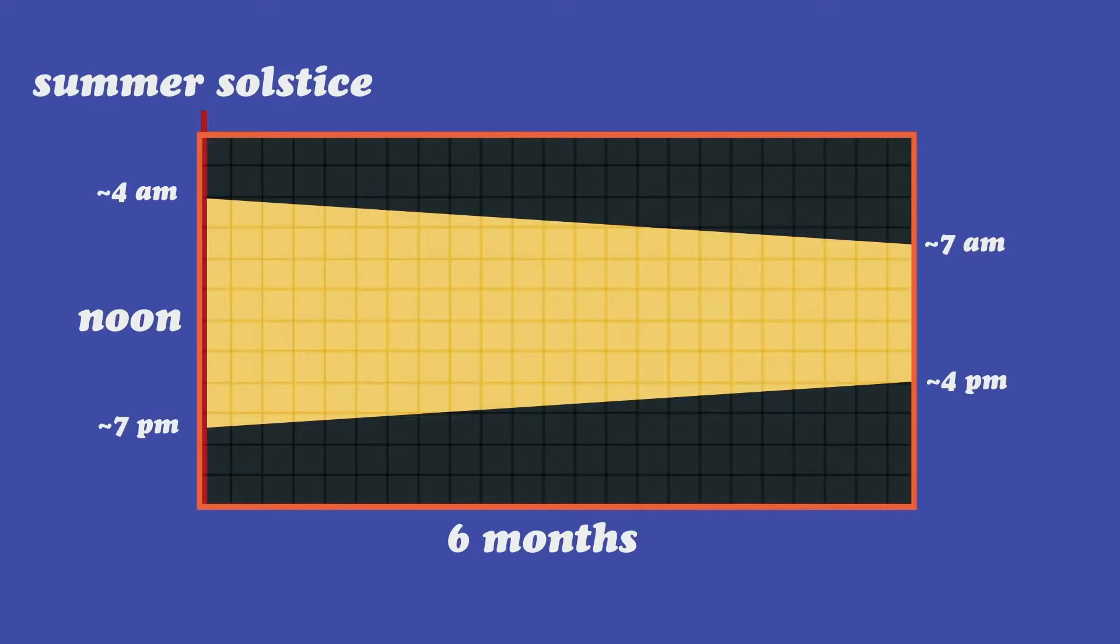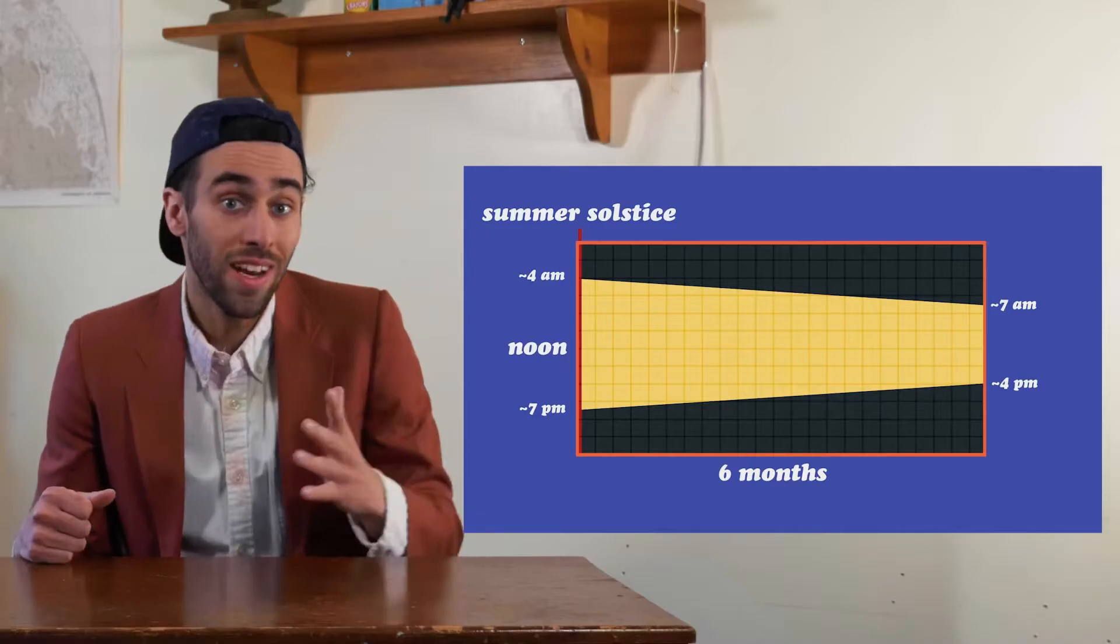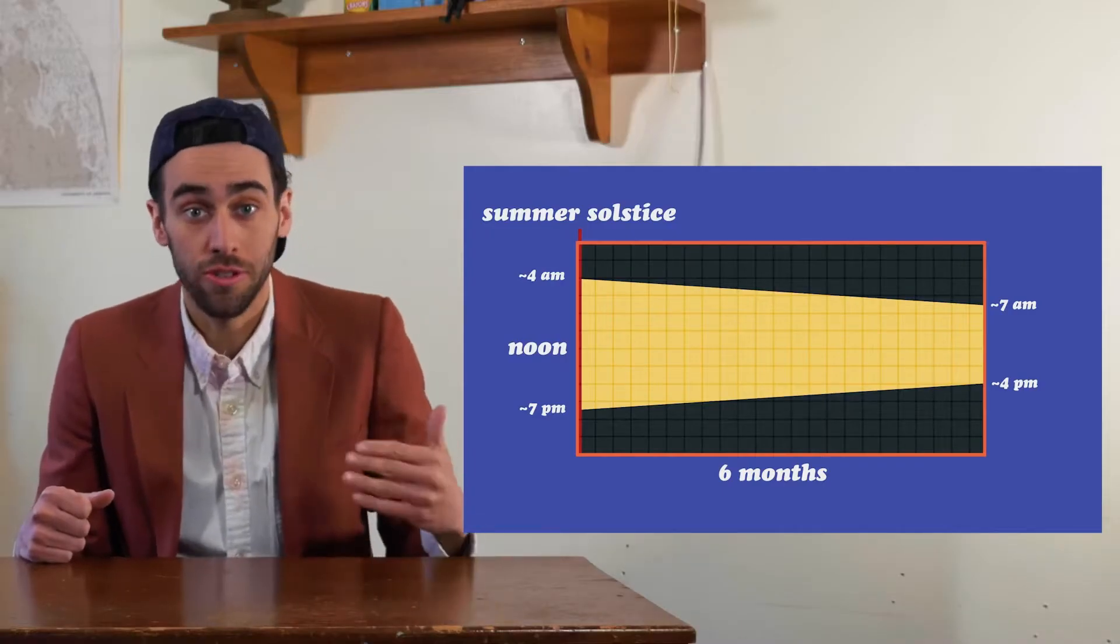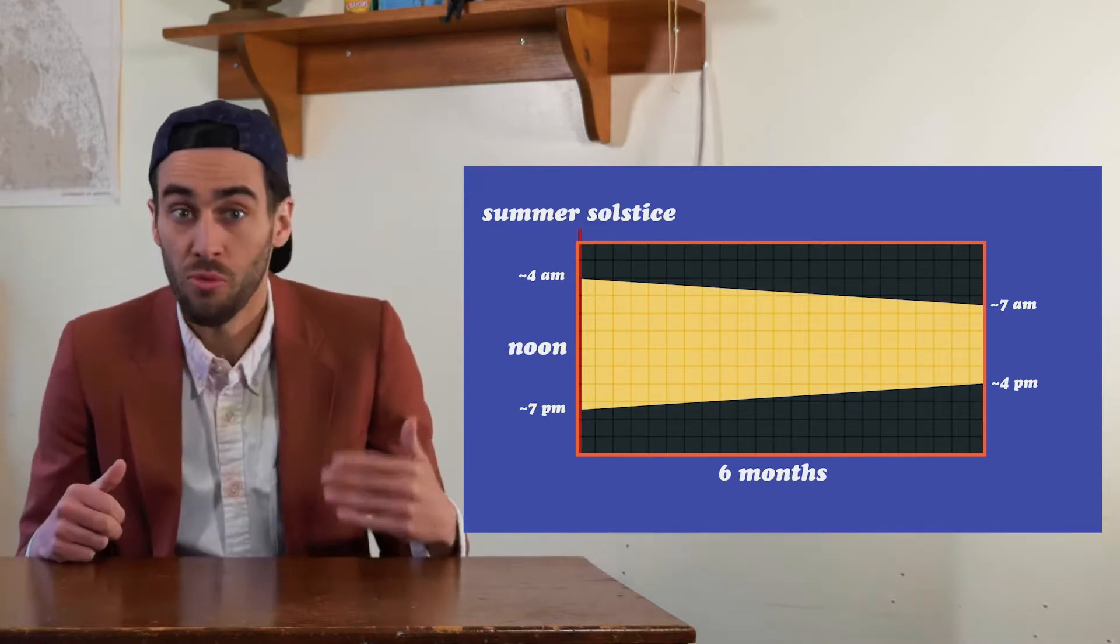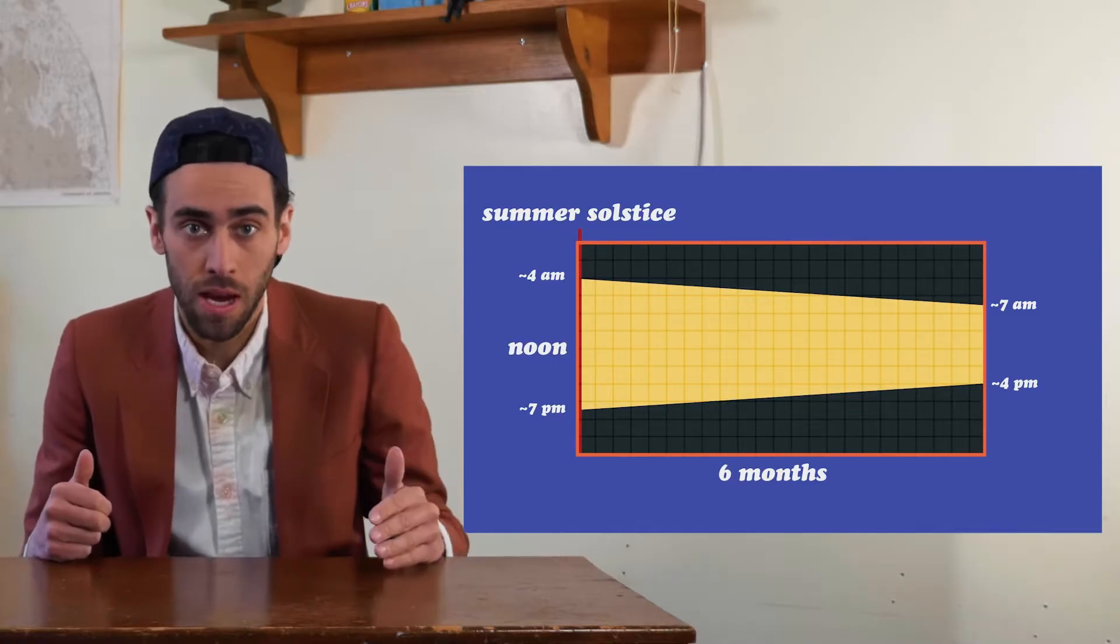So I made this chart to show how the length of a day changes over time. So right here on the left, we have the summer solstice, the longest day of the year. And where I live in Massachusetts, the sun rises at about 4 a.m. and sets at about 7 p.m.